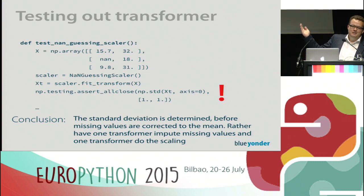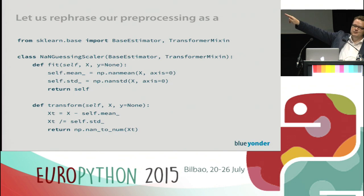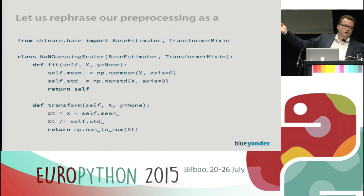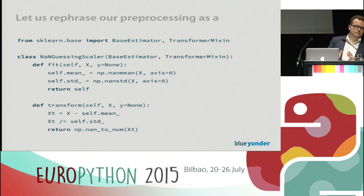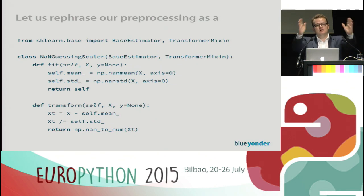If I calculate the standard deviation for each column and expect it to be one, I realize it isn't. The reason is simple: in the code, I calculate the standard deviation of the input sample before replacing NaN values with the mean. The standard deviation of the input sample is wider than the standard deviation after replacing NaN values with the mean — since the mean is at the center, mapping NaN values to the center makes the distribution narrower.